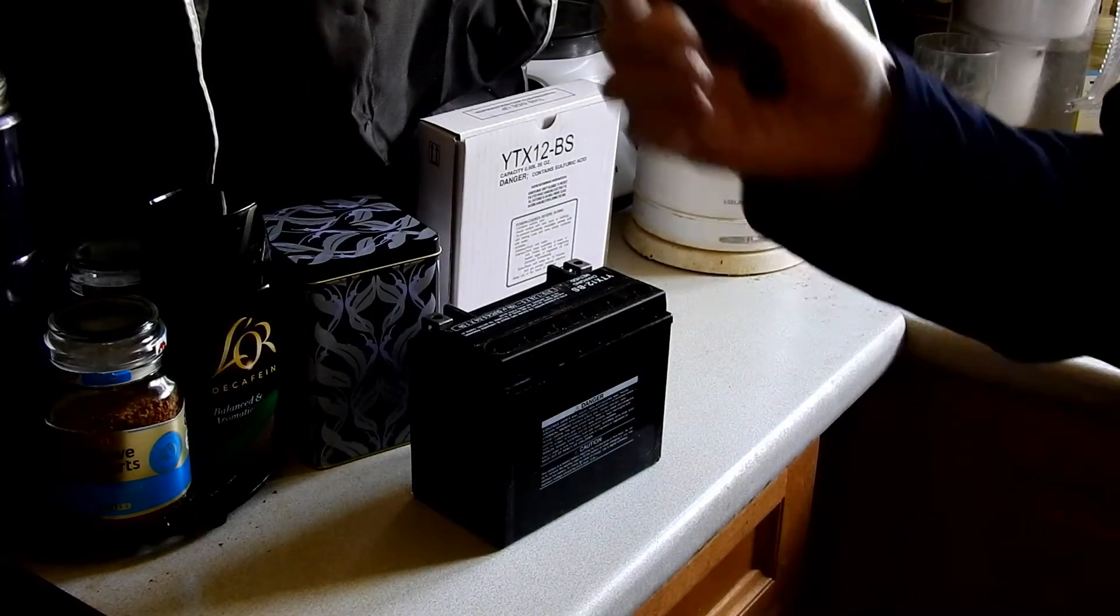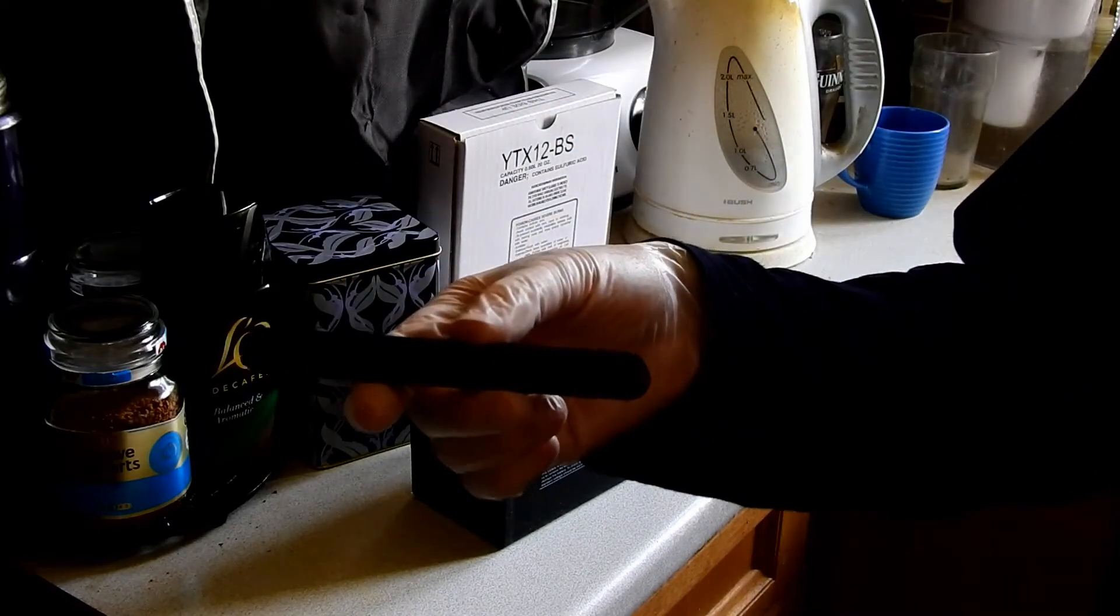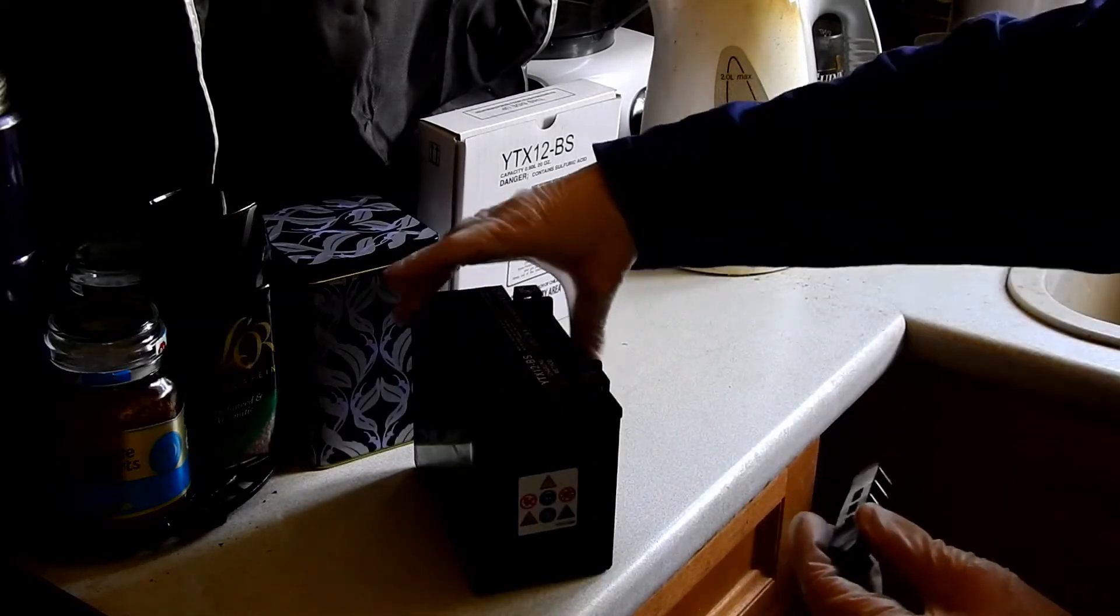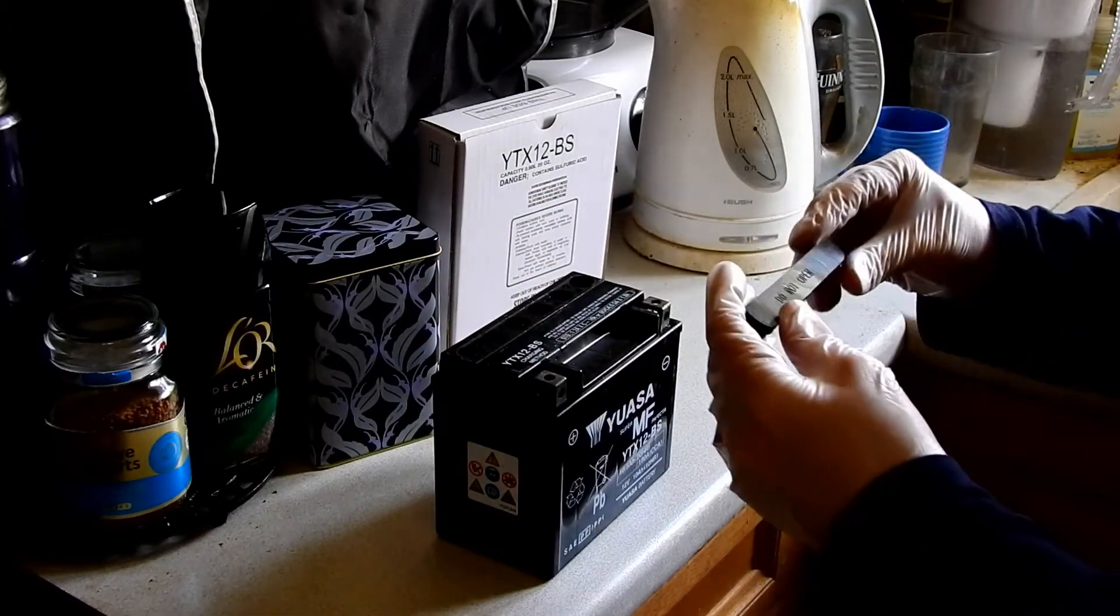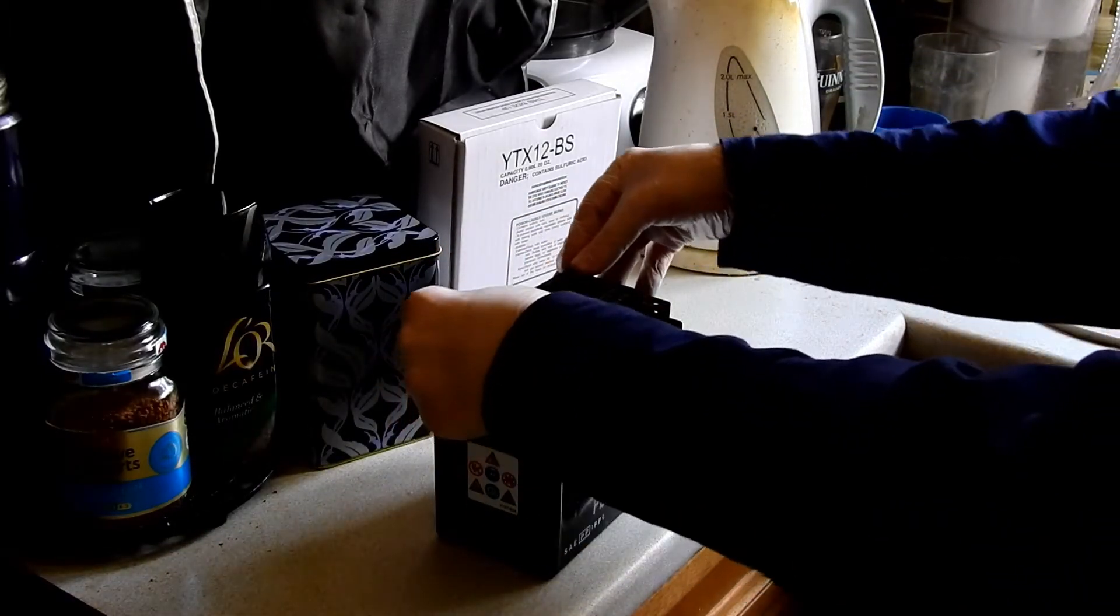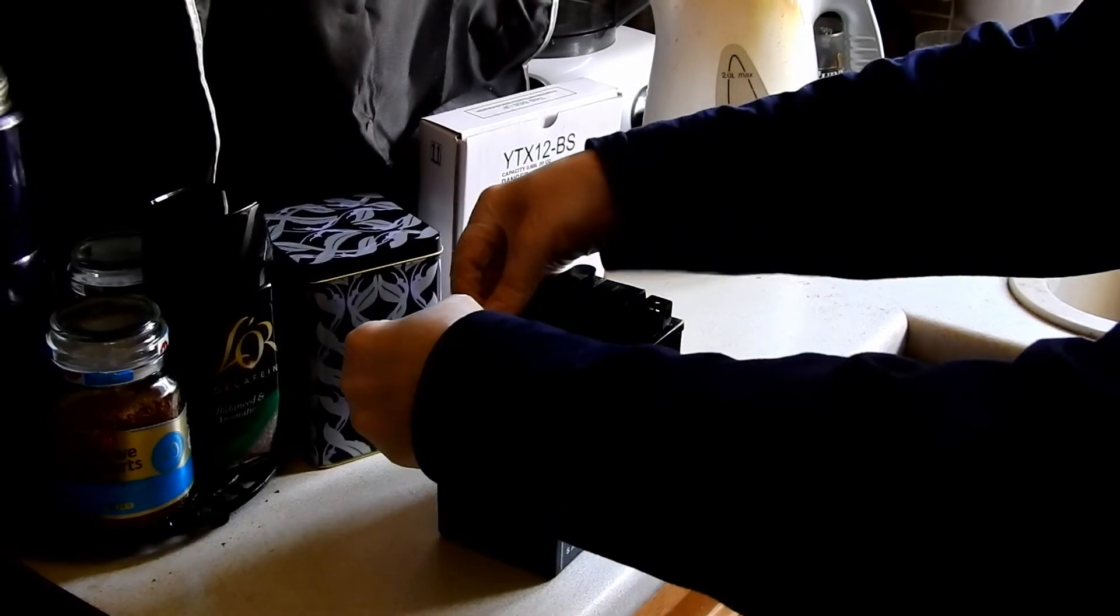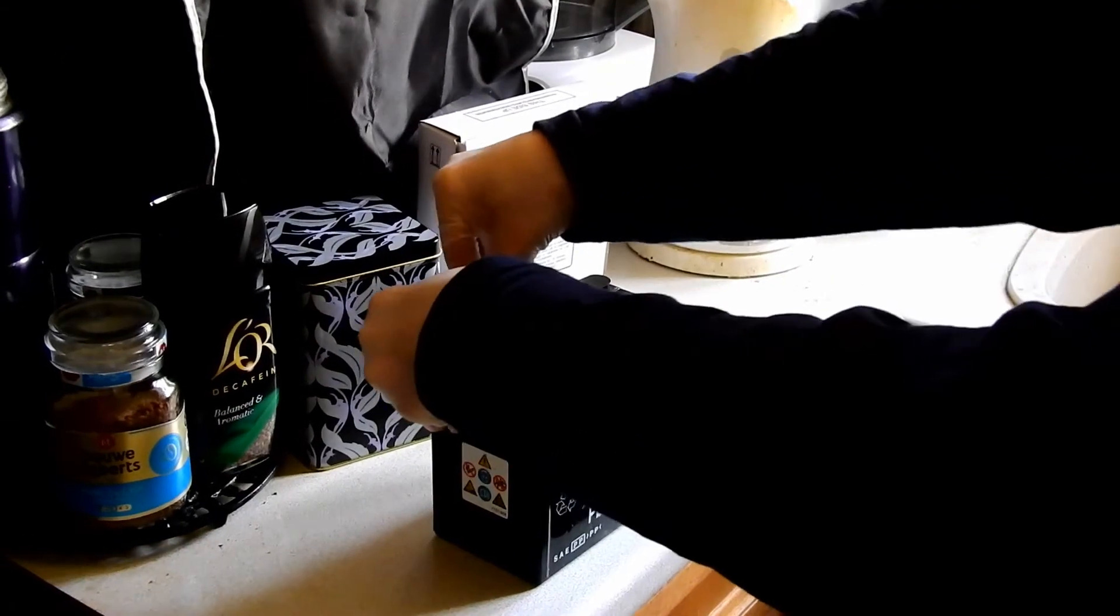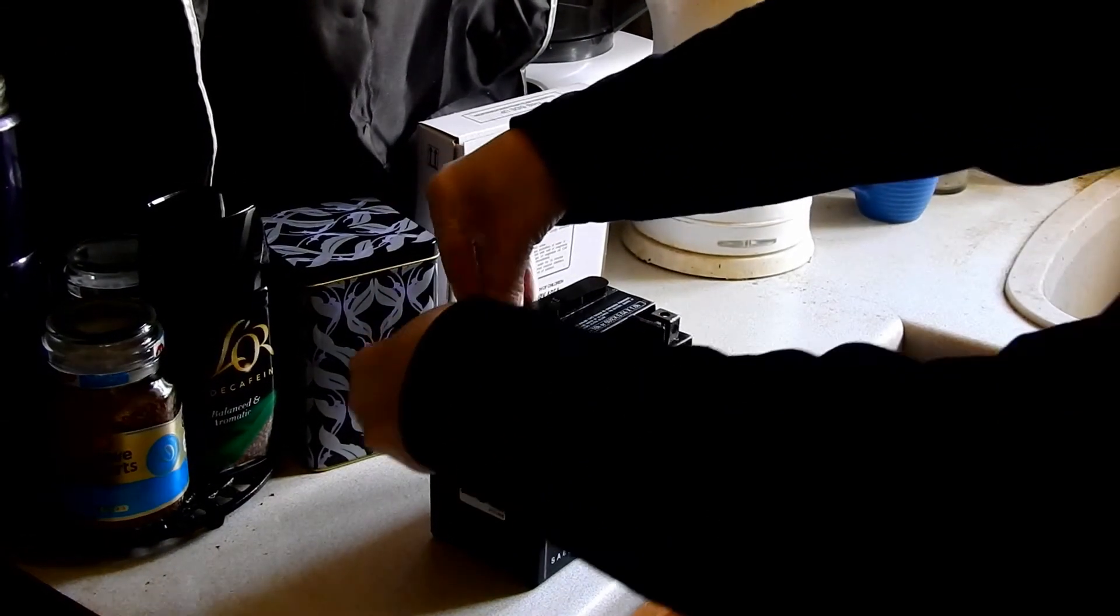Now this that you didn't throw away, and if you did go and fish it out of the bin because you need it. This you put over the top of the cells. And once you've sealed this you don't reopen it. They are maintenance free batteries. They may be a bit of resistance putting this on.